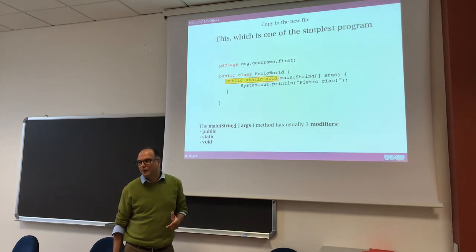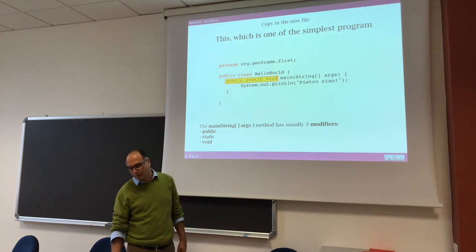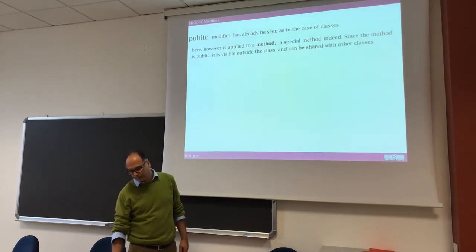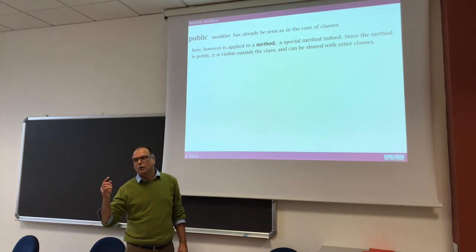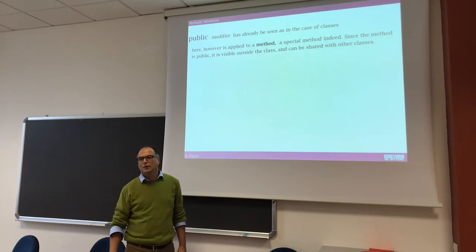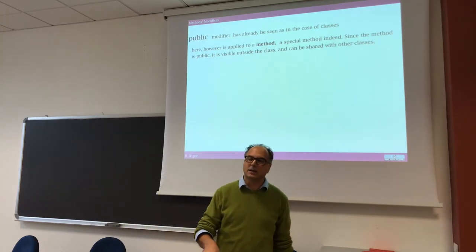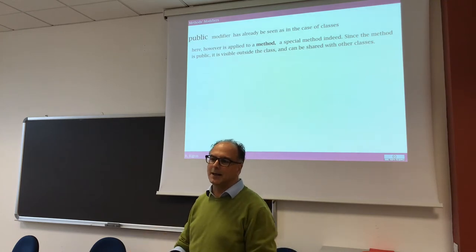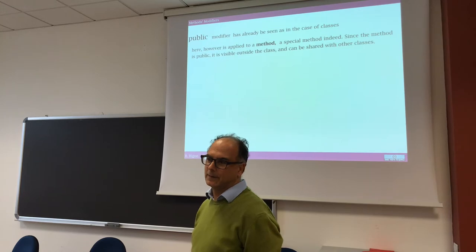Public, we already know what is public. But before we had a class that was public. Here we have a method that is public, a function that is public. It's visible everywhere. If we want the main, we say that main is the program that commands an execution, so it must be public, because otherwise it is not visible outside.